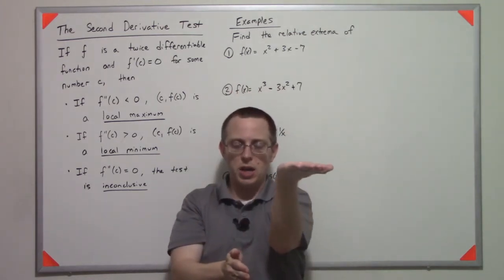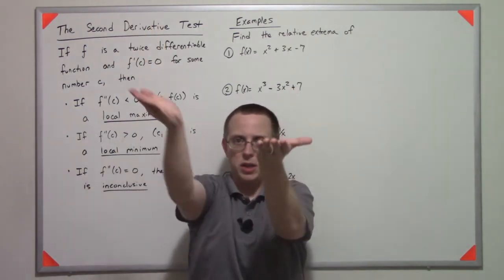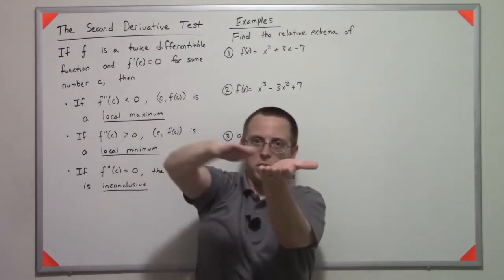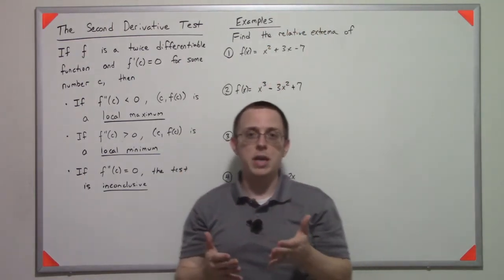Similarly, if the slope of the tangent line was zero but it was concave up, it's got to be a minimum because the curvature is going to have it coming upward, and that's what the second derivative test does for us.